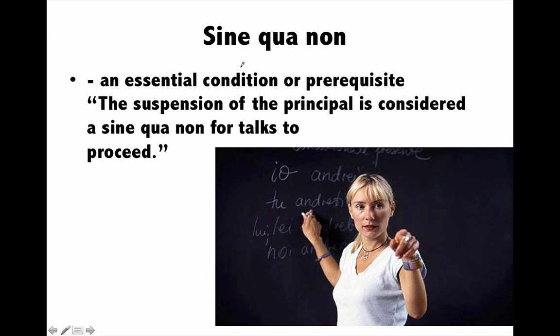Next is 'sine qua non', a very important word meaning the essential condition or prerequisite. For example, if you tell your dad you will not talk to him unless he gets you a chocolate, then the chocolate is a sine qua non — an essential condition. Another example: the suspension of the principal is considered a sine qua non for talks to proceed, meaning students said the principal must be fired before they will talk to the school management.